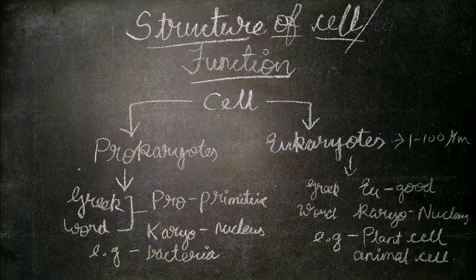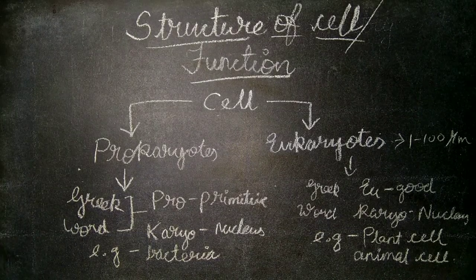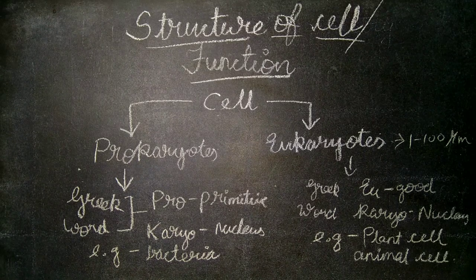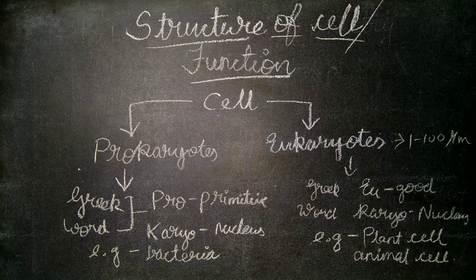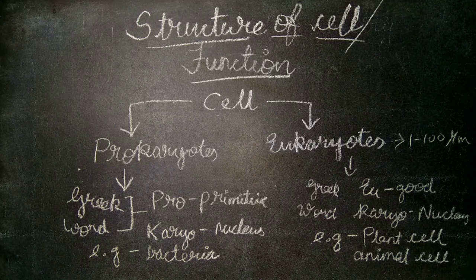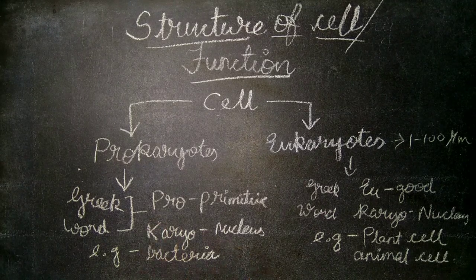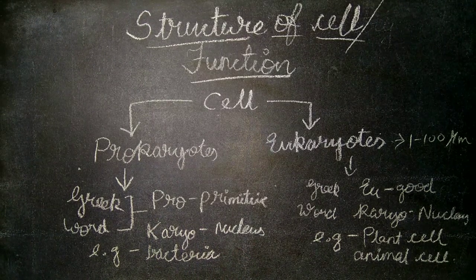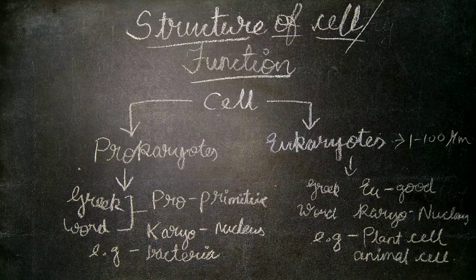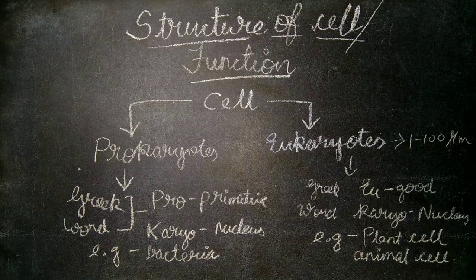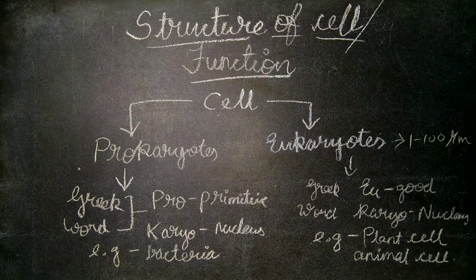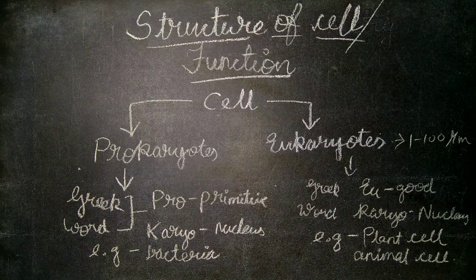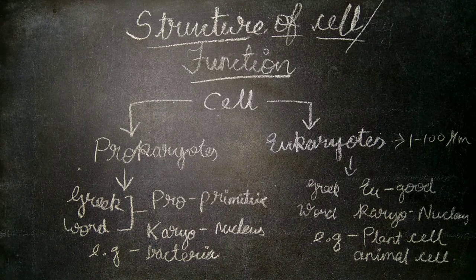Now let's discuss the structure and function of cells. Cells are usually of two types: prokaryotes and eukaryotes. Prokaryote is a Greek word where 'pro' means primitive and 'karyon' means nucleus. Eukaryote is also a Greek word where 'eu' means good and 'karyon' means nucleus. Examples of prokaryotes are bacteria, and examples of eukaryotes are plant cells and animal cells.